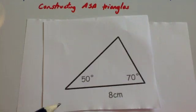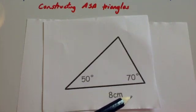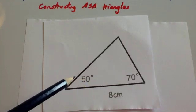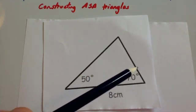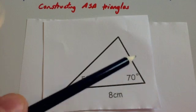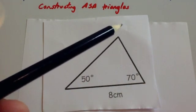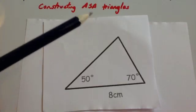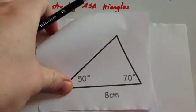To draw this, start by drawing the 8 centimeter line on the bottom, then measure the 50 degree angle on one side and the 70 degree angle on the other side, draw two lines, and where those two lines intersect will be the top of the triangle.